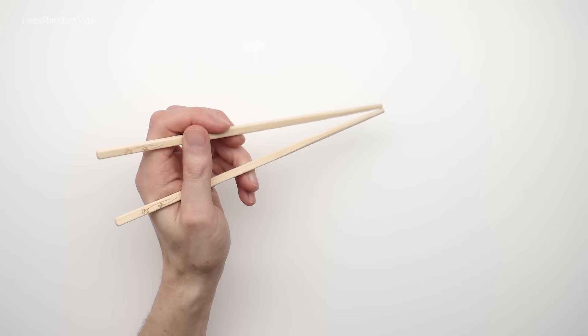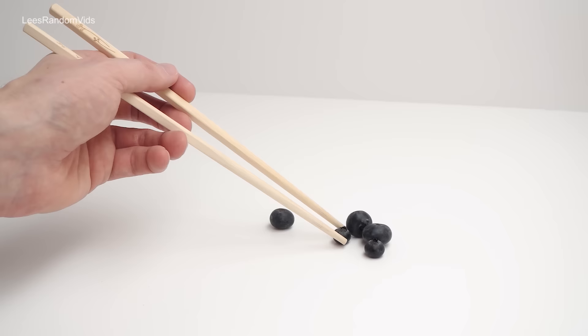And then just practice the movement of opening and closing the top chopstick by wiggling your first and second finger. So when you practice that movement a little bit, you can start to try and pick a few things up. I've just got a couple of blueberries here.